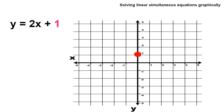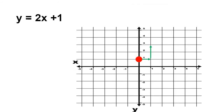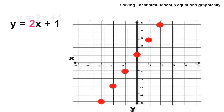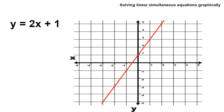Starting from the point at which the line crosses the y-axis at point 1, move along 1 square and move up 2. When you get to your next point, move along 1 square and move up 2 again, and keep repeating that process. I've plotted a few points for you — that is how you plot this equation.